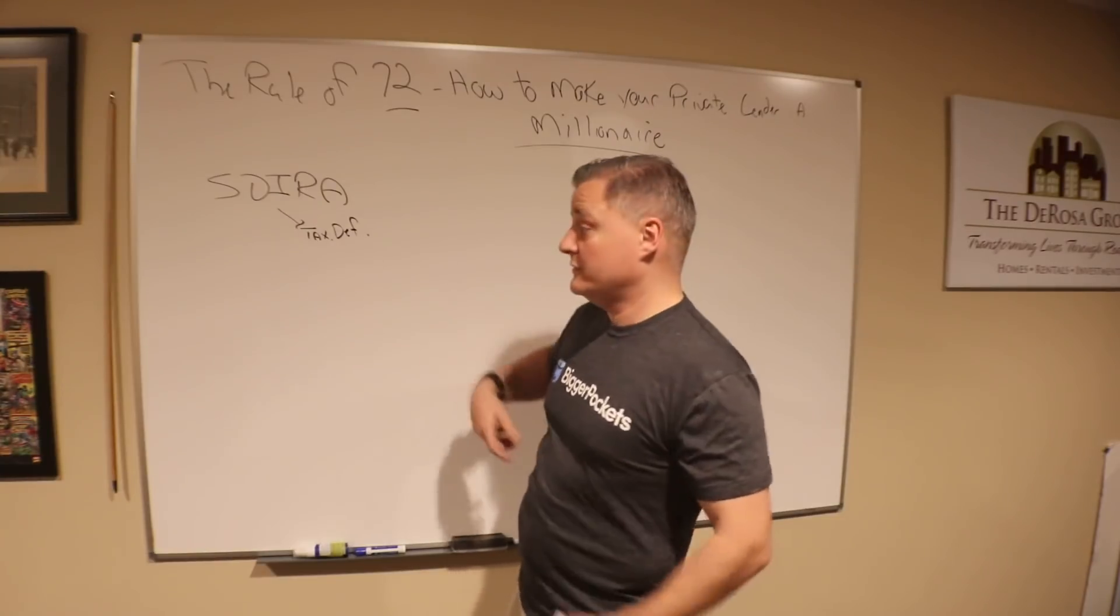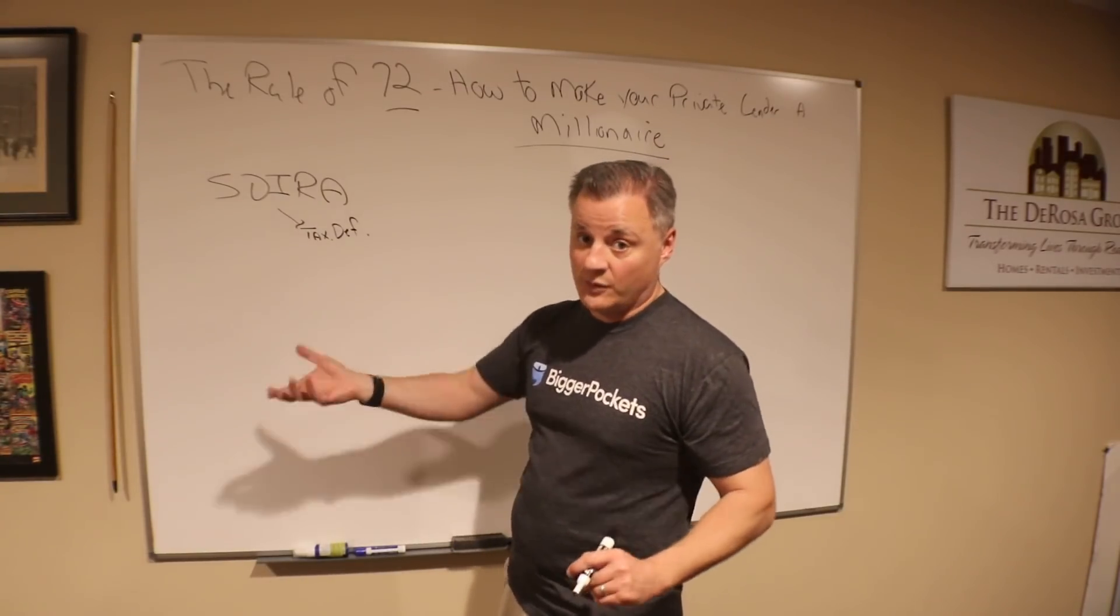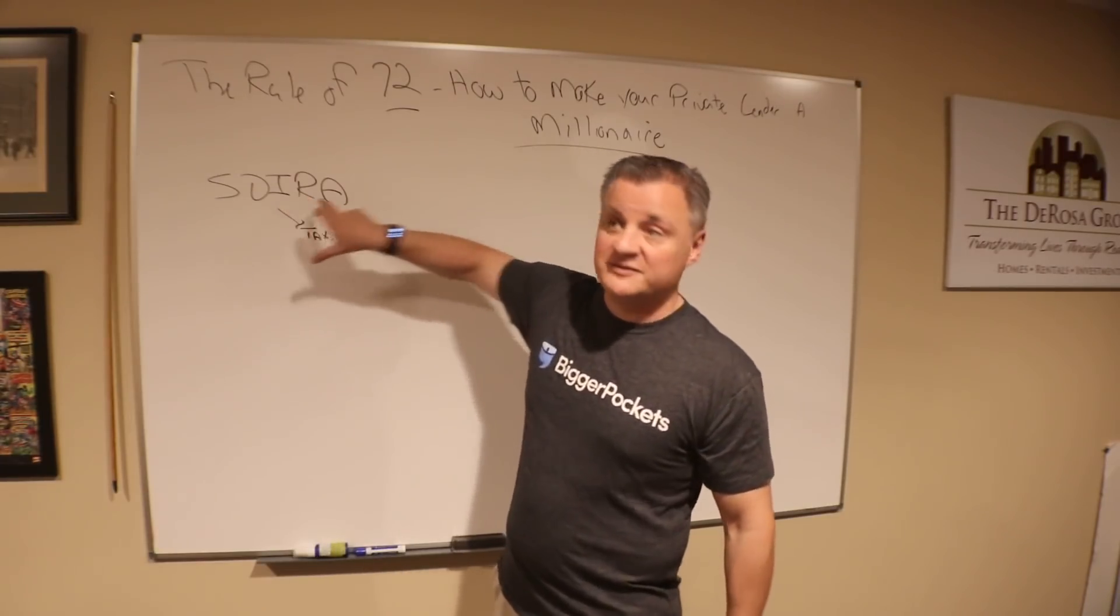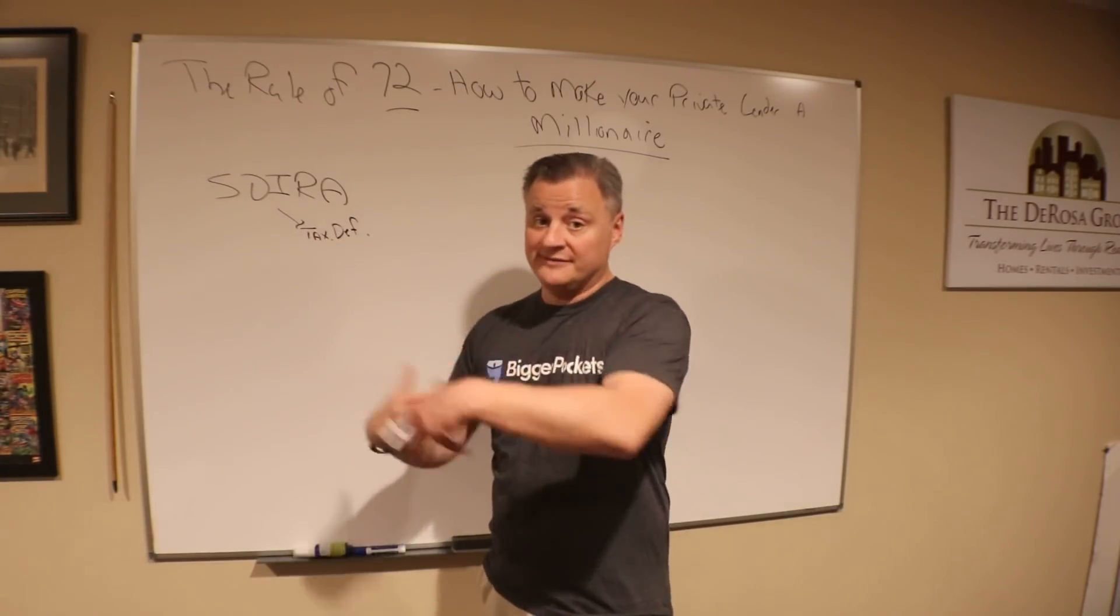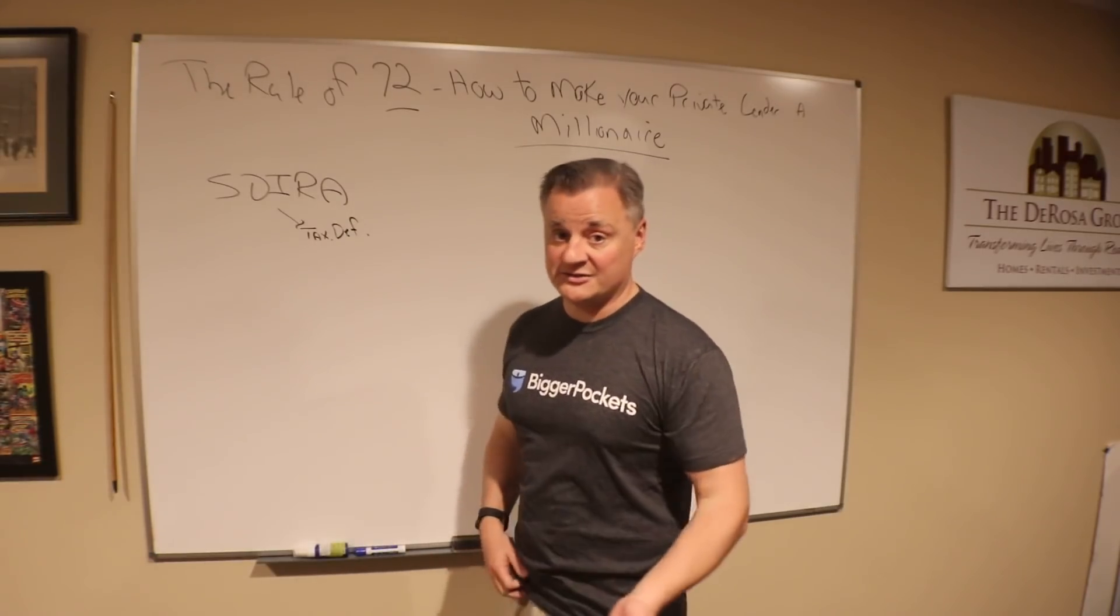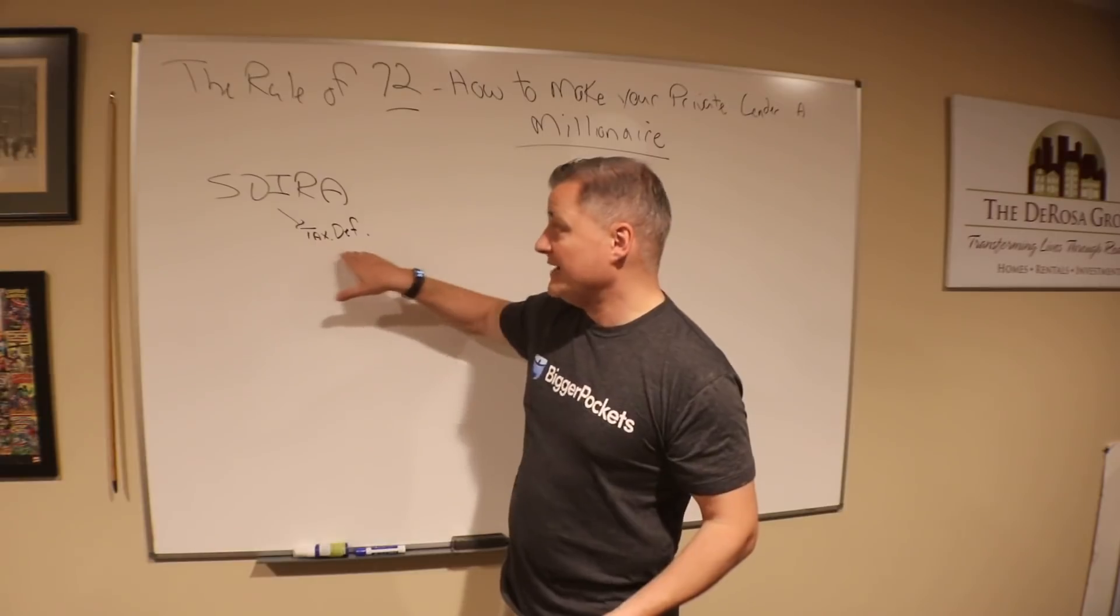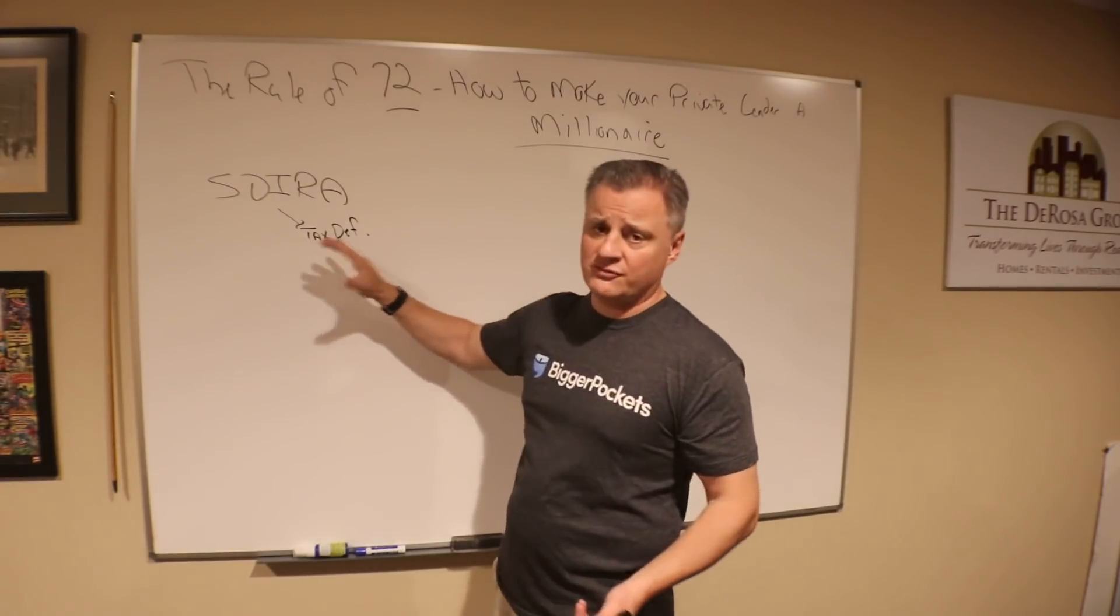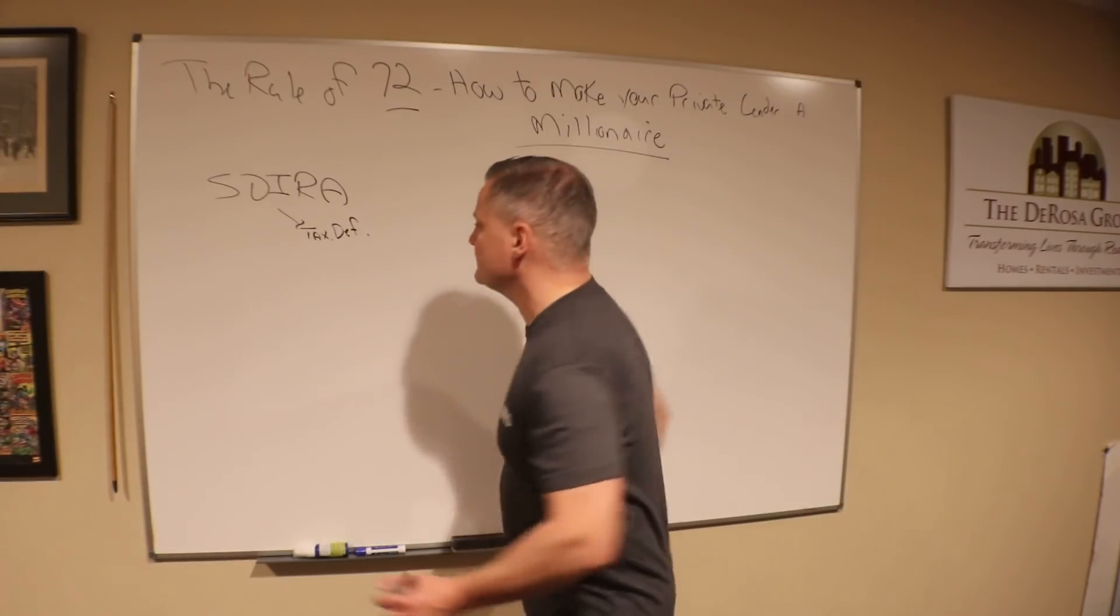At the end of the year, they don't have to write a check to the IRS for whatever interest you pay them. If it's not through a self-directed IRA and somebody's investing with cash, they do have to shave off a portion of their income and pay tax on the money. But a self-directed IRA is all tax-deferred. That's why this is a great vehicle for real estate loans.